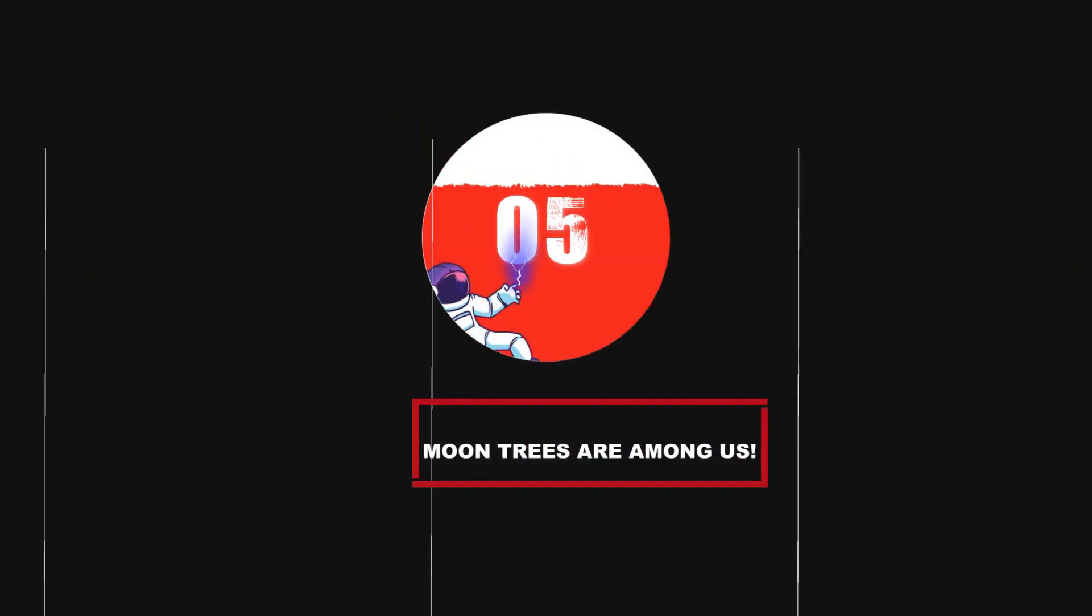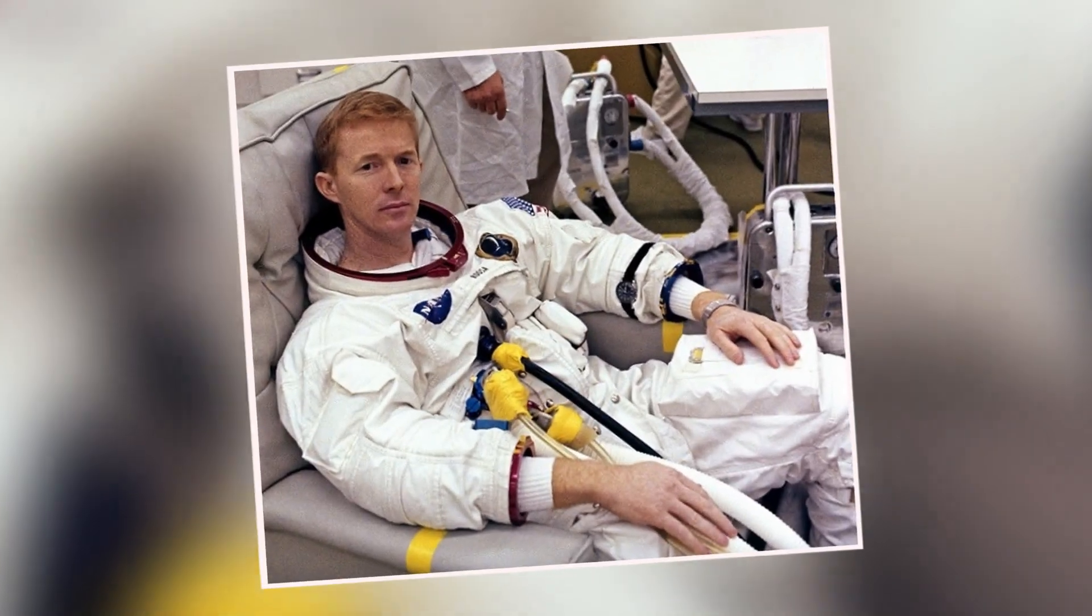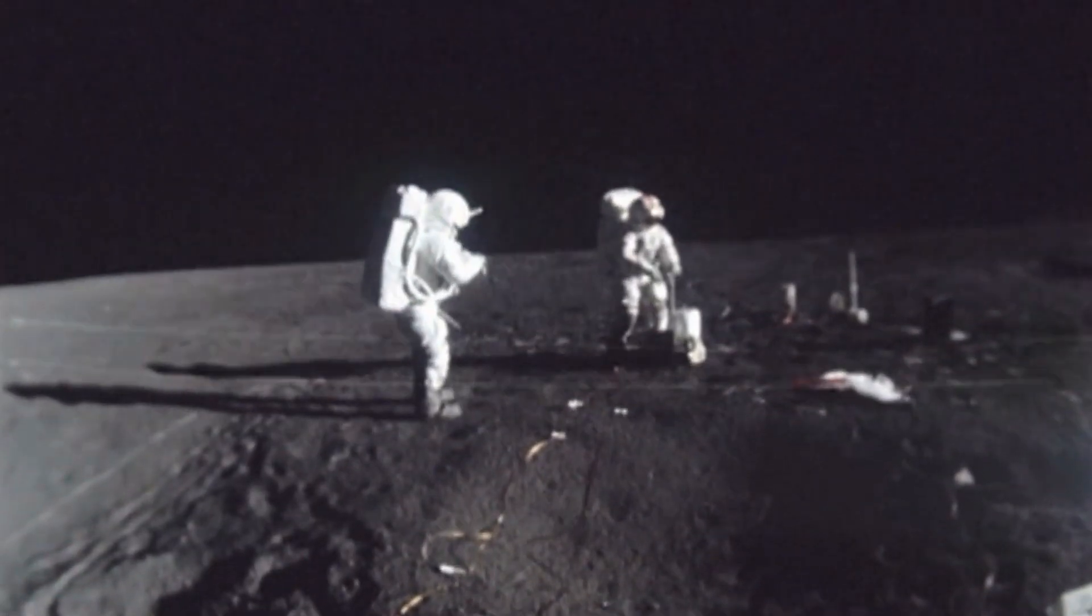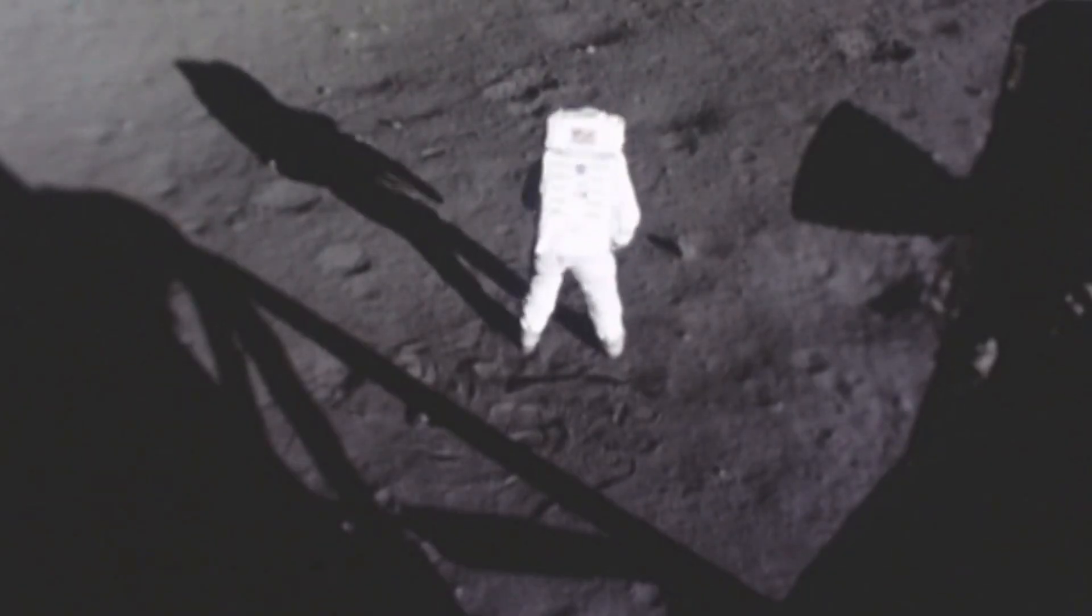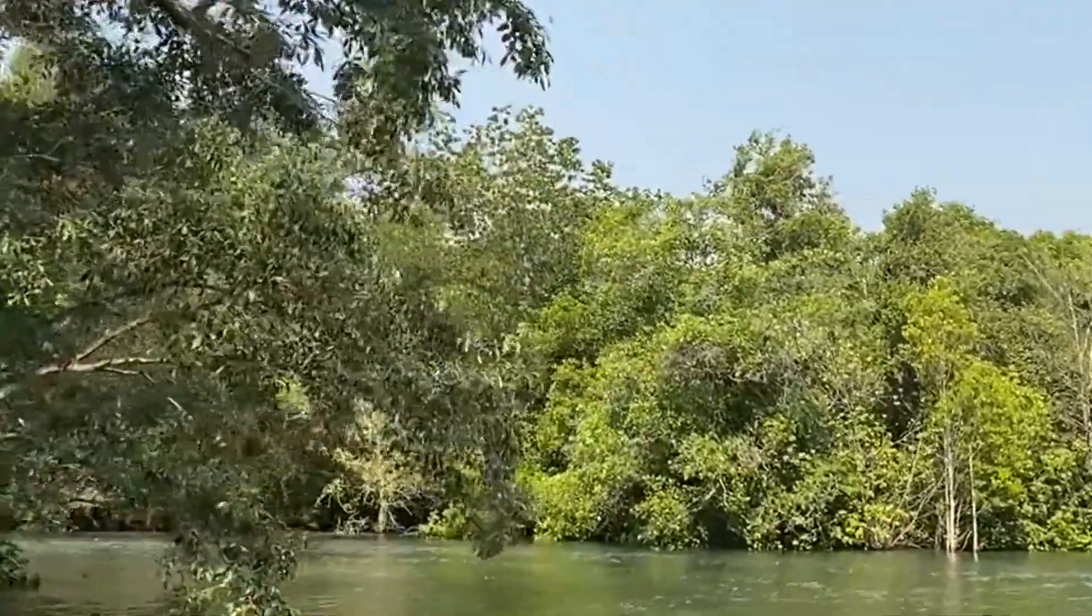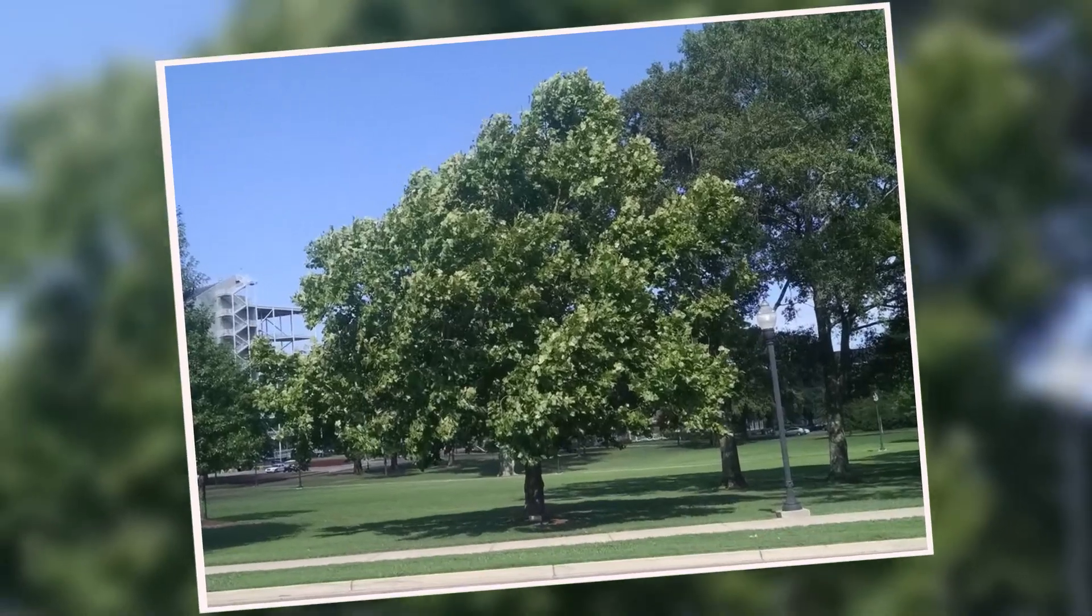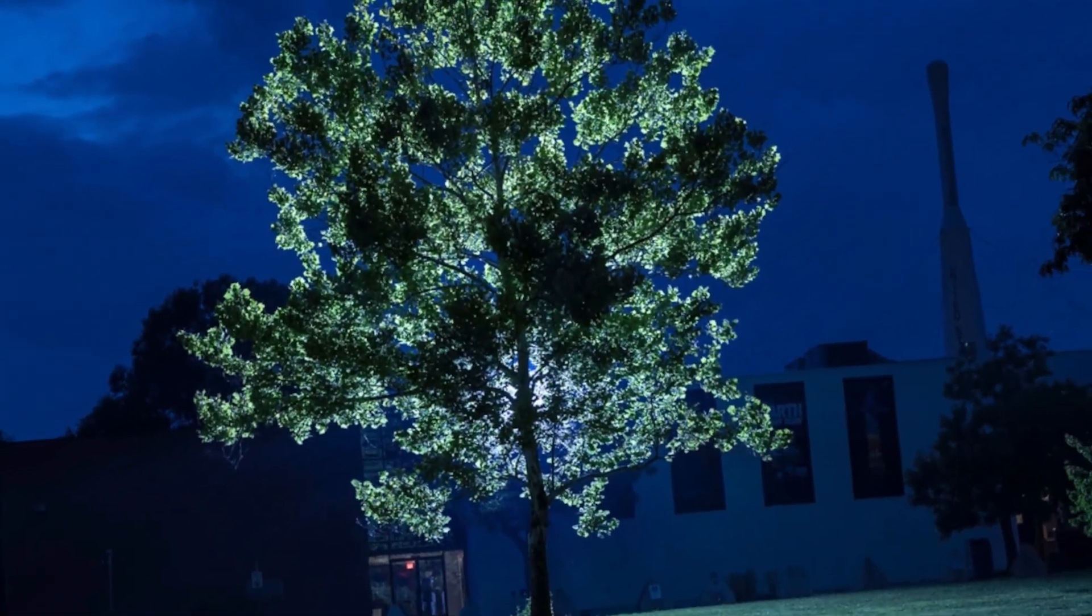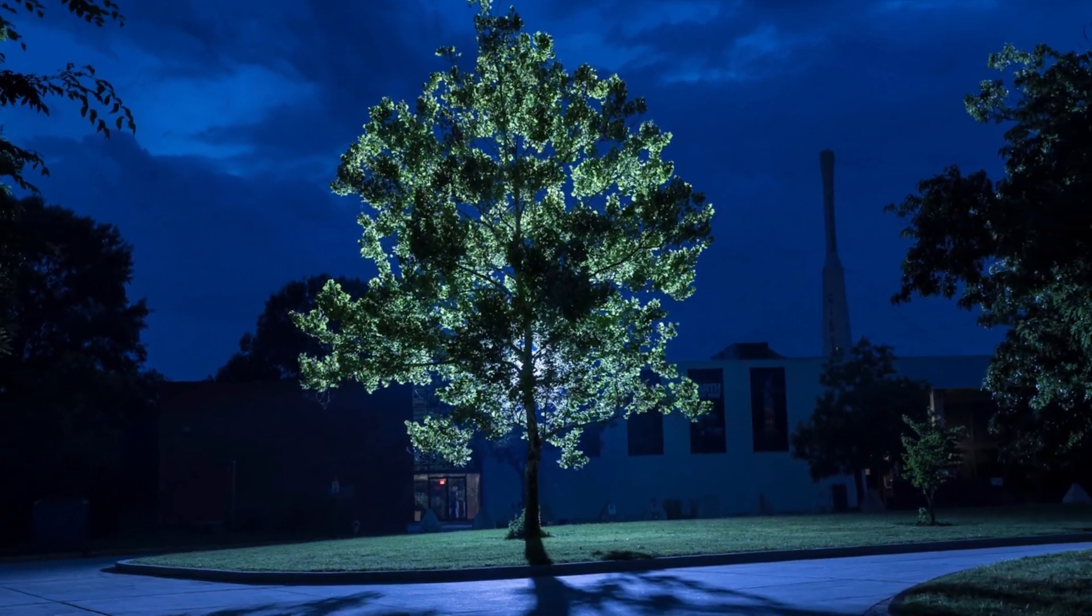Number 5: Moon trees are among us. Apollo 14 astronaut Stuart Roosa had some seeds with him while in orbit around the Moon when Alan Shepard and Edgar Mitchell were on the surface. The seeds were later grown when they got back to Earth, and more than 400 were planted at different places in the country and around the world. They are also known as Moon trees and are still alive and doing well today.